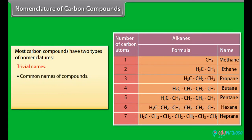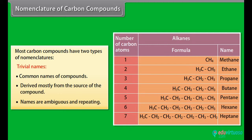Trivial names. Trivial names are the commonly used names of carbon compounds. These are derived mostly from the source of the compound. However, names formed using this manner are ambiguous and repeating.